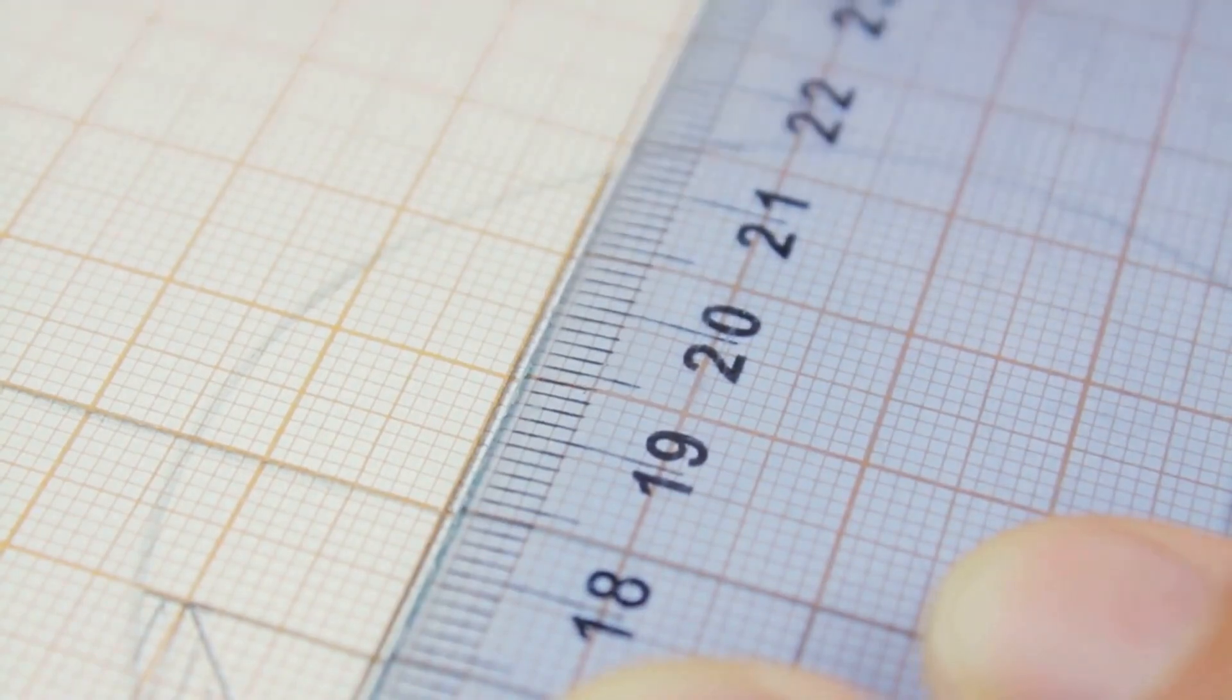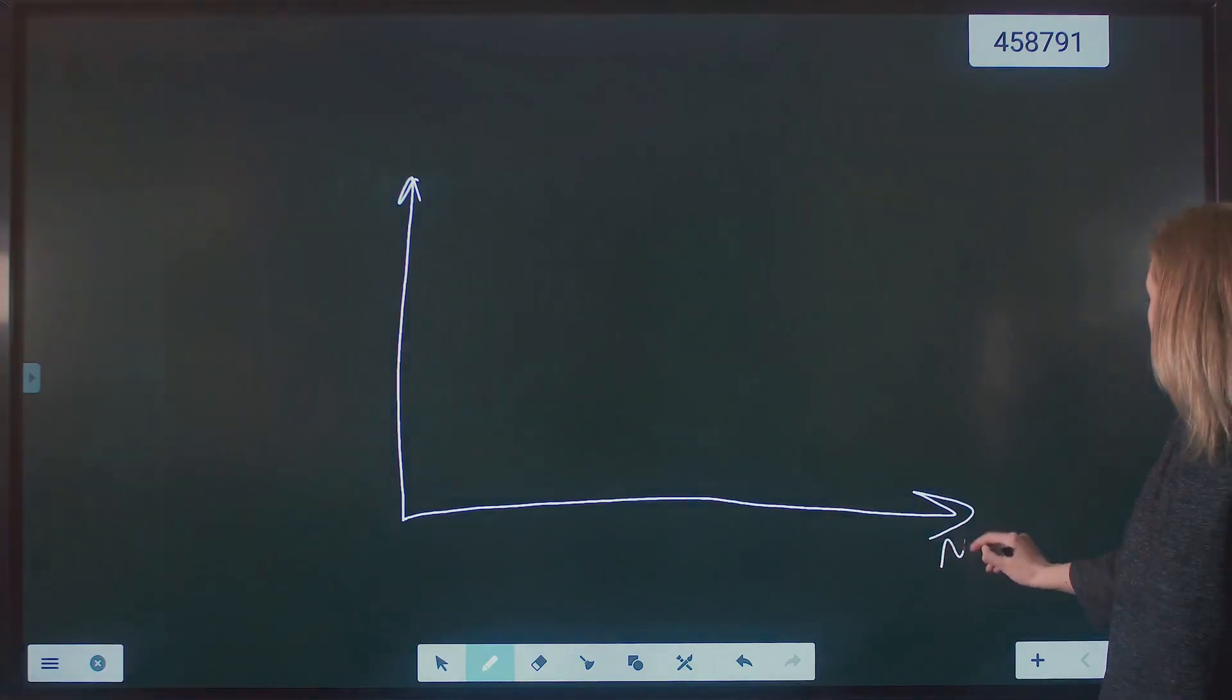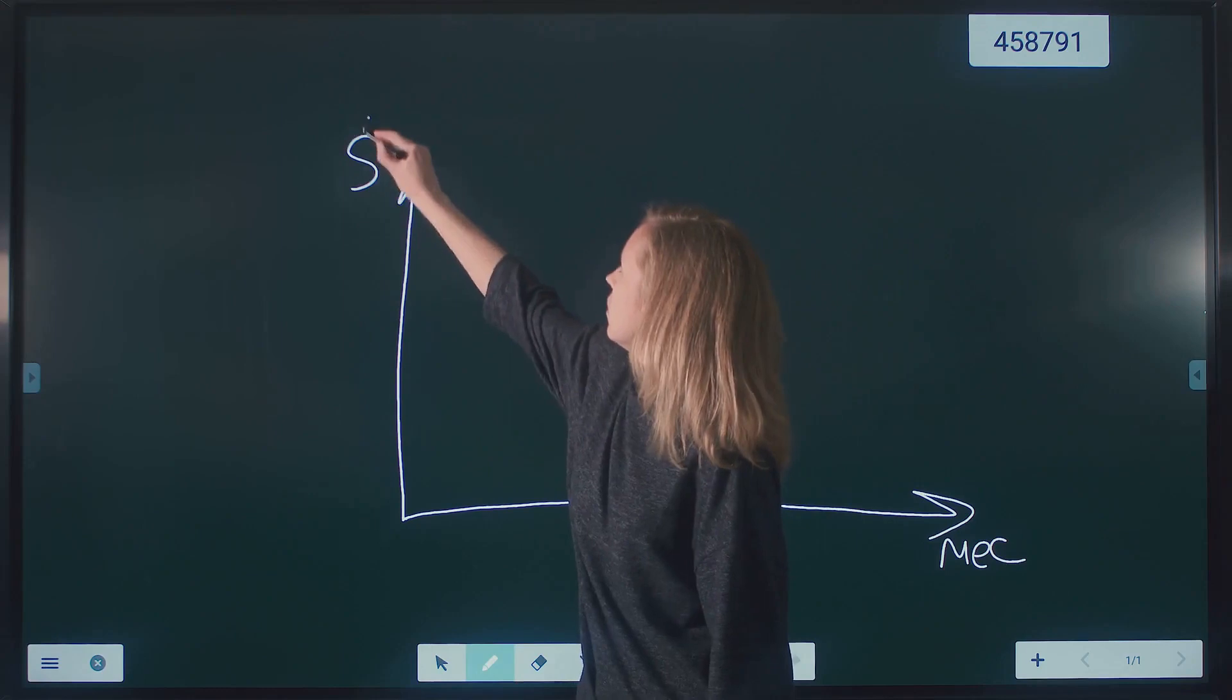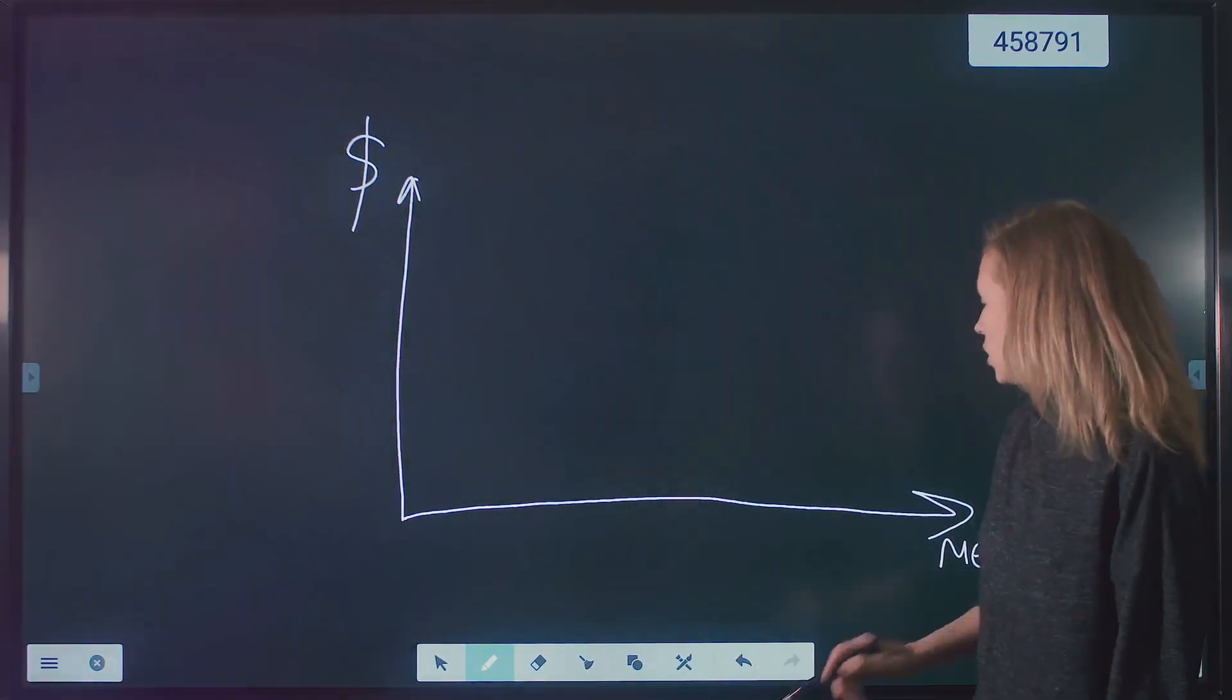But what if the data is more complex and a straight line doesn't capture the essence of the relationship between x and y? That's where polynomial regression comes into play. We transform the simple linear equation into a polynomial equation by adding powers of the independent variable.